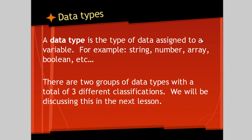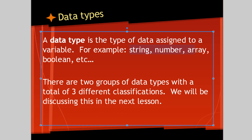A data type is the type of data assigned to a variable — for example, string, number, array, boolean, etc. We also have objects and arrays, which we'll get into in a future video. There are two groups of data types with a total of three different classifications, and we will be discussing this in the next lesson.